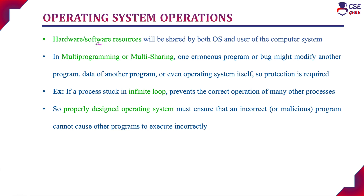Hardware and software resources are always shared by both the operating system and the user. But in a multi-programming or multi-sharing environment, many processes will execute in parallel — more than one process will execute with the CPU at a time. If one process raises any error or a bug is created, since many processes are executing in parallel, one process's bug may affect the other processes, delay them, or even change their output. Suppose if a process is stuck in an infinite loop, it may affect other processes and won't allow them to execute because it will make the system hang.